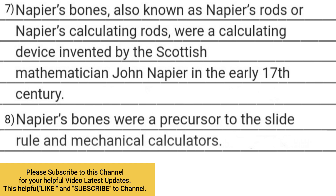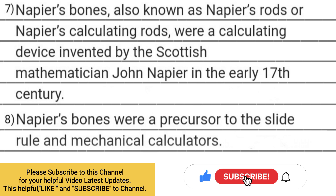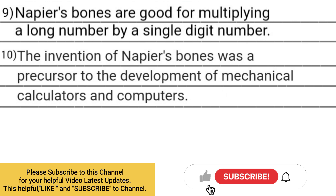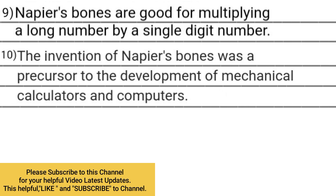8. Napier Bones were a precursor to the slide rule and mechanical calculators. 9. Napier Bones are good for multiplying a long number by a single digit number. 10. Napier Bones was a precursor to the development of mechanical calculators and computers.